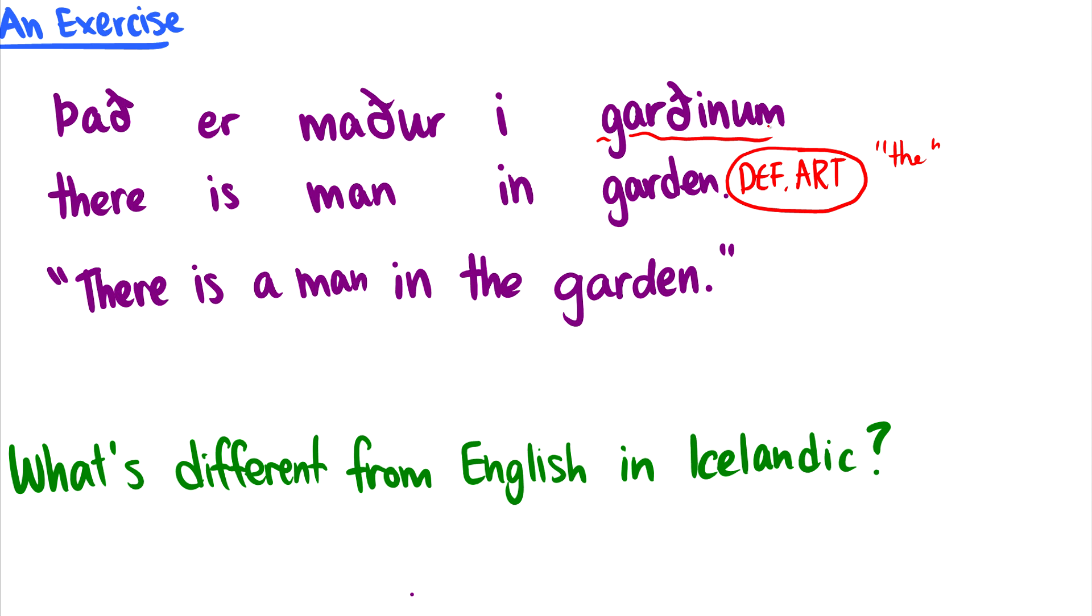Okay, another thing to note here is that we have there is man in garden dot def art, but there's no indefinite article here. So there's no word for a that comes before man. So one of the things in Icelandic is that if we want to specify an indefinite article like a man, an apple, we just don't include the article at all. We only include the article as part of a word if it is the definite article.